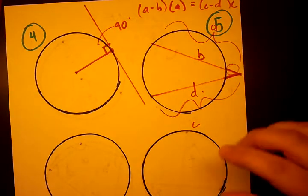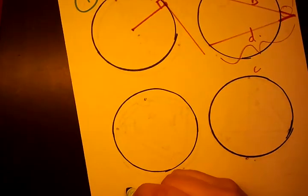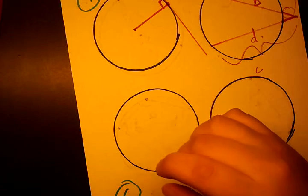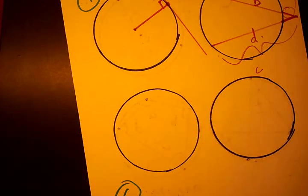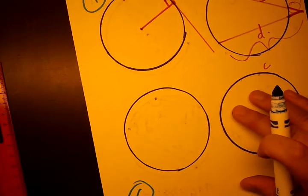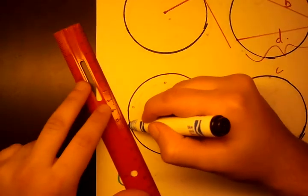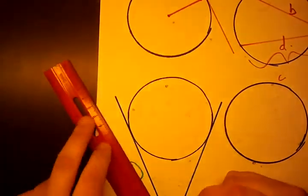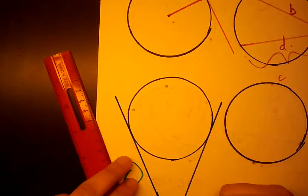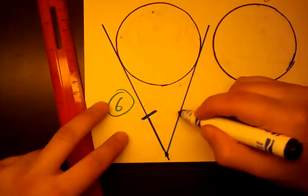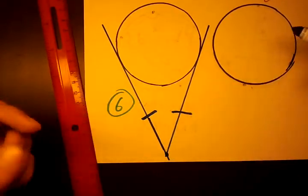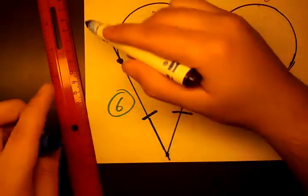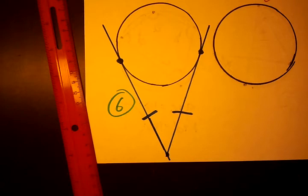Theorem number 6 deals with tangents. If we draw two tangents that intersect at a point, then the length from that point to where each tangent touches the circle is equal. So the two tangent segments are always equal in length when drawn from the same external point.